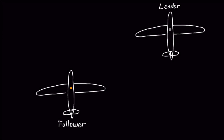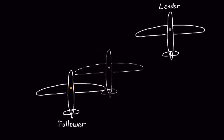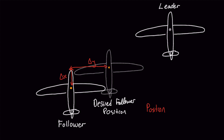Now that we've got our plant put together, I'll implement a PID controller to reduce the distance between the follower and the leader. The error is defined as the distance between the follower's position and its desired position. This error is first calculated in the world frame, and it is then converted to the follower's body frame. In practice, we wouldn't have perfect state information for both aircraft, but we'll assume it here for simplicity. Along with position error, I also use velocity error — the difference between the follower's velocity and the leader's.